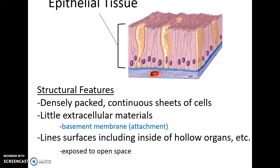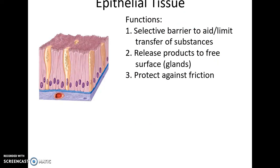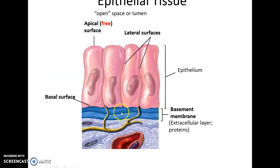Epithelial tissue is structurally a densely packed, continuous sheet of cells with very little extra material except for the basement membrane. It lines surfaces of hollow organs and is exposed to some sort of open space. Functions include providing a selective barrier, allowing certain things to pass through, producing secreted products, and protecting against friction. The basal surface lies attached to the basement membrane, the lateral surfaces are where cells contact each other, and the apical surface is the free surface near the open space or lumen.